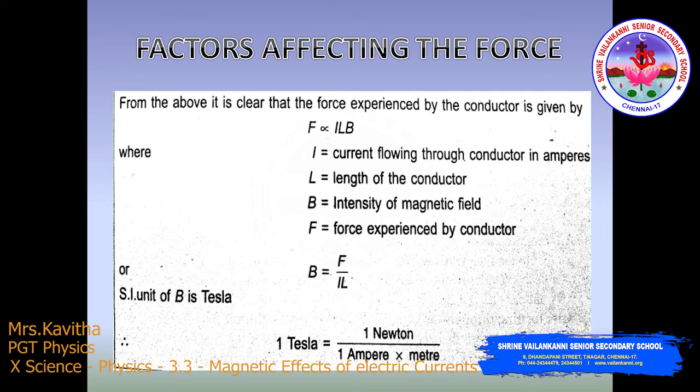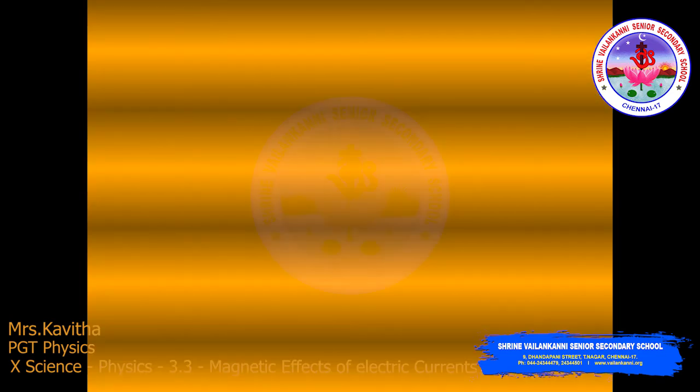The magnetic field B is equal to F divided by IL. The unit of magnetic field is Tesla.